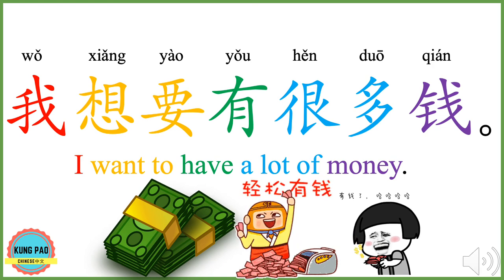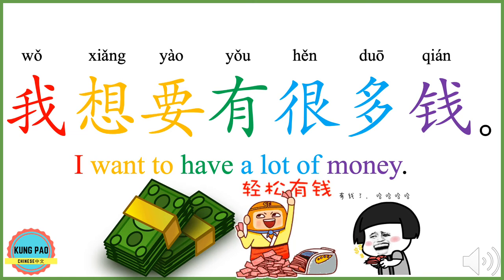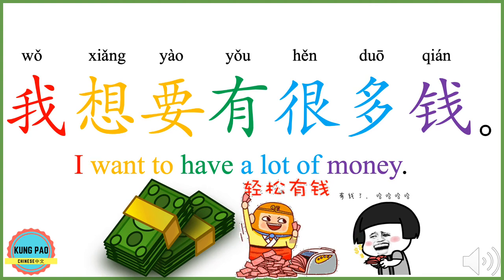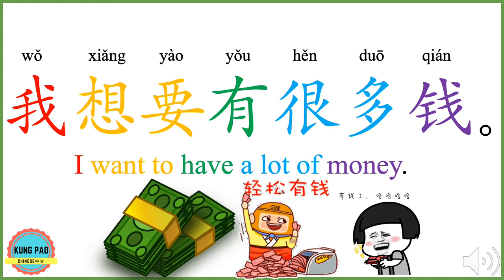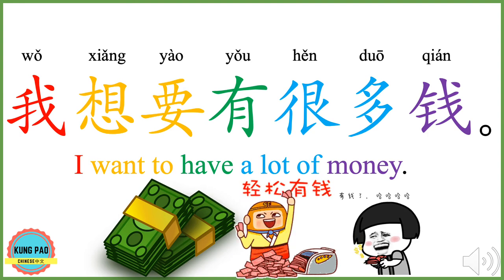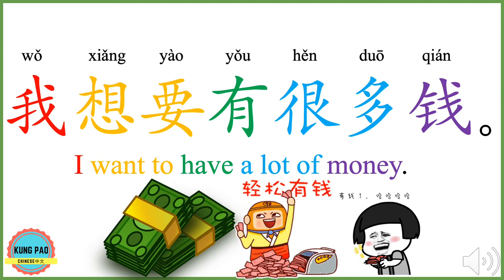我想要有很多钱。 我 means I. 想要 means want to. 有 means to have. 很多 means a lot of. 钱 means money. 我想要有很多钱 means I want to have a lot of money, or I would like to have a lot of money.